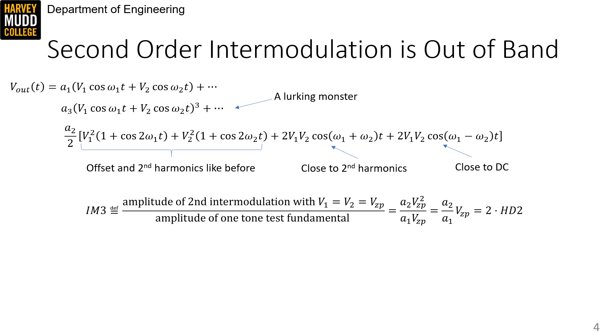The tones generated by the two-tone test are summarized in this graph. We can see the DC offsets, the sum and difference intermodulation terms, and the harmonic distortion terms.